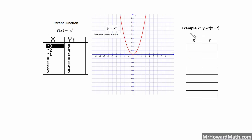Here we have example 2: y equals f of x minus 2. We're starting with our parent function here that we have graphed and a table, and we are going to apply this transformation. This transformation is in with x, so it's going to be a horizontal shift, and it will be opposite of this sign. So instead of left 2, we're actually doing the opposite, which is going to be moving to the right 2. Our y coordinates will stay the same, but our x coordinates will move 2 to the right.